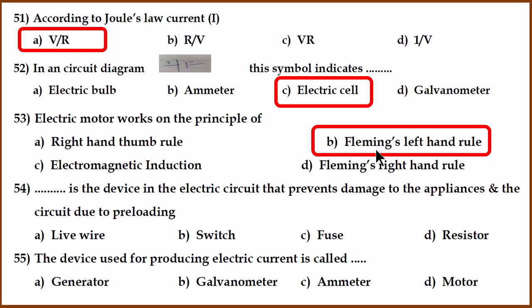Okay 54th question. What is the device in the electric circuit that prevents damage to the appliances and circuit due to overloading? It should be overloading. There's nothing like pre-loading as far as electric circuits is concerned. The correct answer is fuse. Fuse is the device which prevents the damage to the appliance due to overloading.